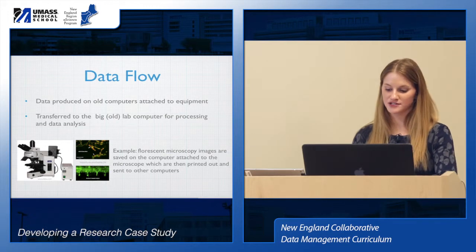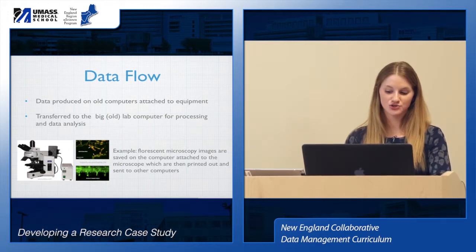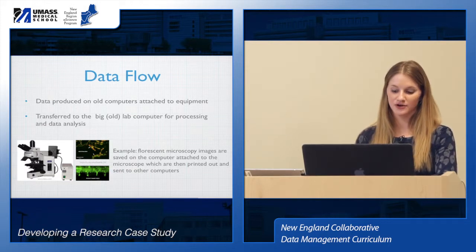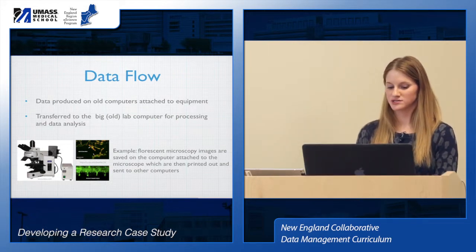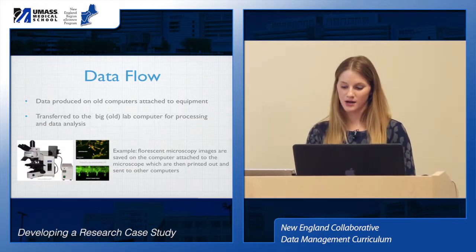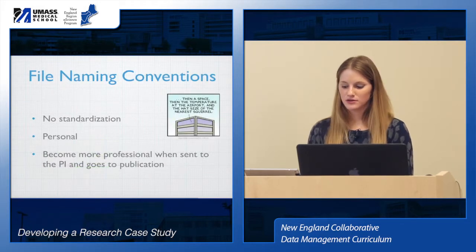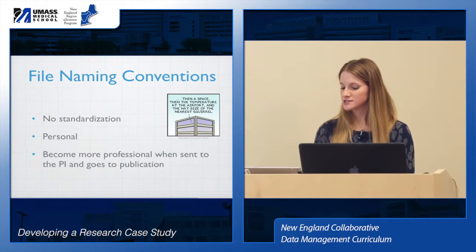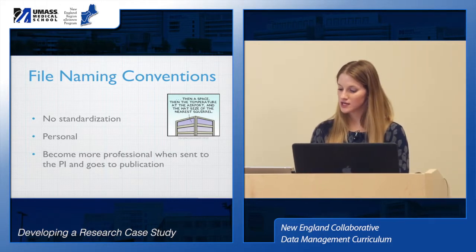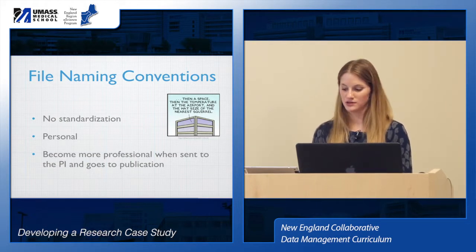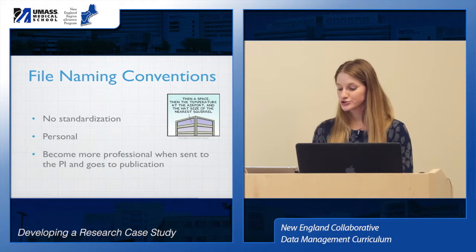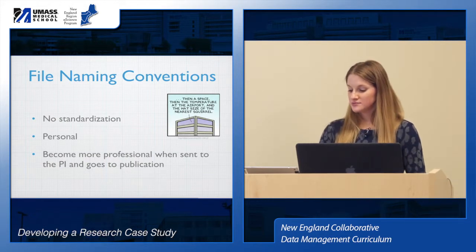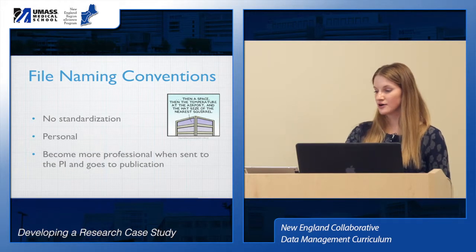For example, when taking a fluorescent microscope image, they are saved on the computer attached to the microscope, which are then printed out and sent to other computers — so you have a hard copy of the experiment as well as a digital copy on someone's computer in the lab. The lab does not have a standardized way to document its data. They have no file naming conventions for saving and locating their documents and images, and they have no data dictionary within the lab. Files usually involve a person's name and title or description meaningful only to that person in the lab, and these files are then renamed for the principal investigator or when they are ready for publication.